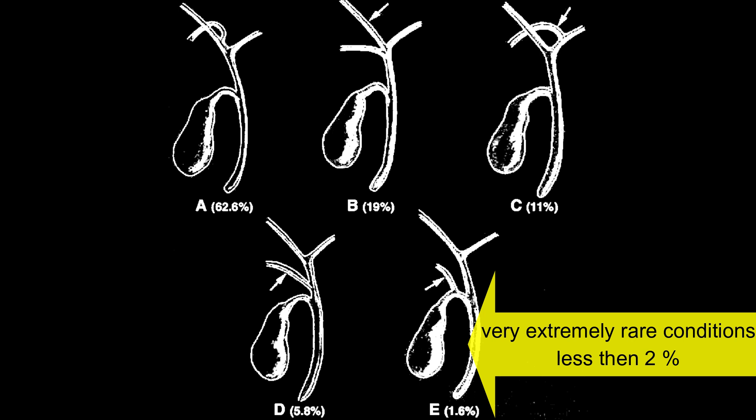Today's case is that Type E variant where in less than 2% of patients the cystic duct enters into the right posterior sectoral duct. How we will be able to confirm or visualize this will be seen further in this video.